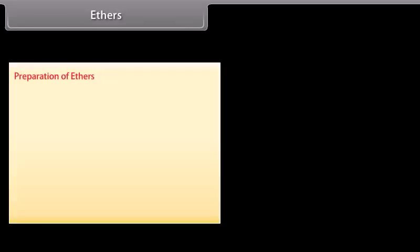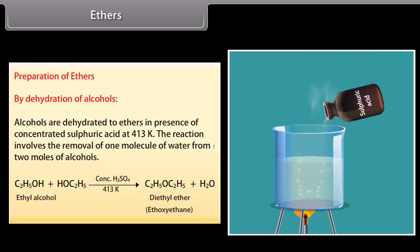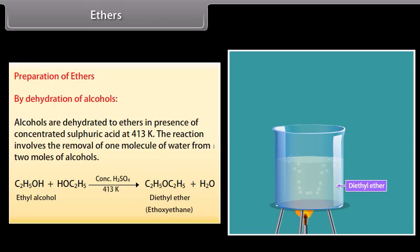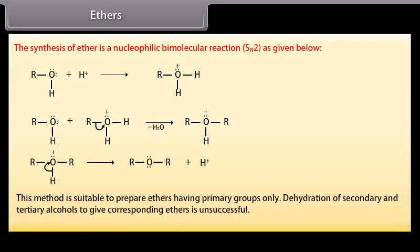Ethers — preparation of ethers by dehydration of alcohols: alcohols are dehydrated to ethers in the presence of concentrated sulfuric acid at 413 K. The reaction involves the removal of one molecule of water from two moles of alcohol. The synthesis of ethers is a nucleophilic bimolecular reaction. This method is suitable to prepare ethers having primary groups only; dehydration of secondary and tertiary alcohols to give corresponding ethers is unsuccessful.